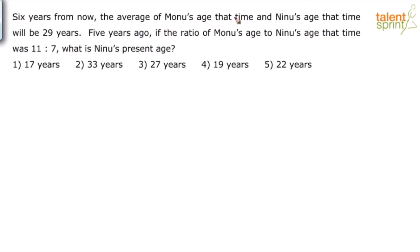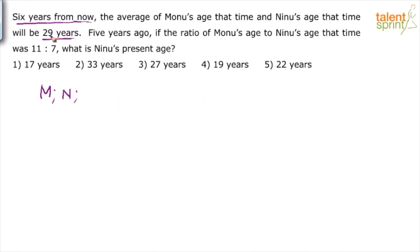Six years from now, the average of Monu's age and Ninu's age will be 29 years. Let us assume that Monu's present age is m and Ninu's present age is n. After six years, the average is 29, so the current average — which is (m + n) / 2 — will be equal to 23 years, that is 29 minus 6.